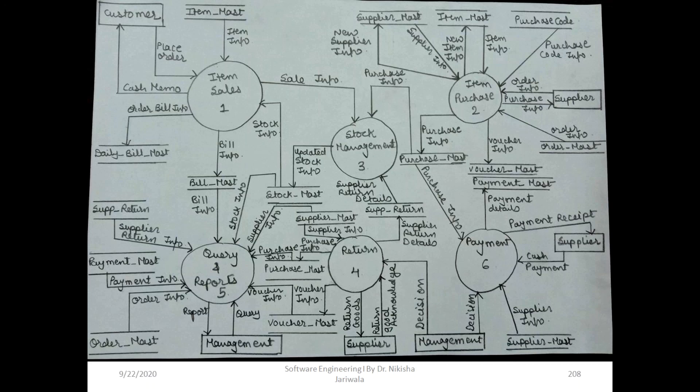So the departmental store related level zero DFD and level one DFD with six processes are now complete. Further refinement into level two, level three, data dictionary (DD), and process specification (P-Spec) can also be done. The departmental store level 0 and level 1 DFD are complete.